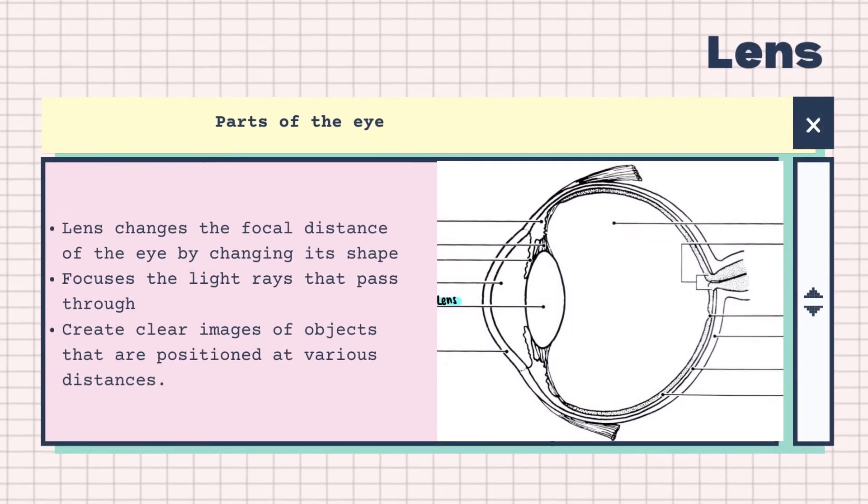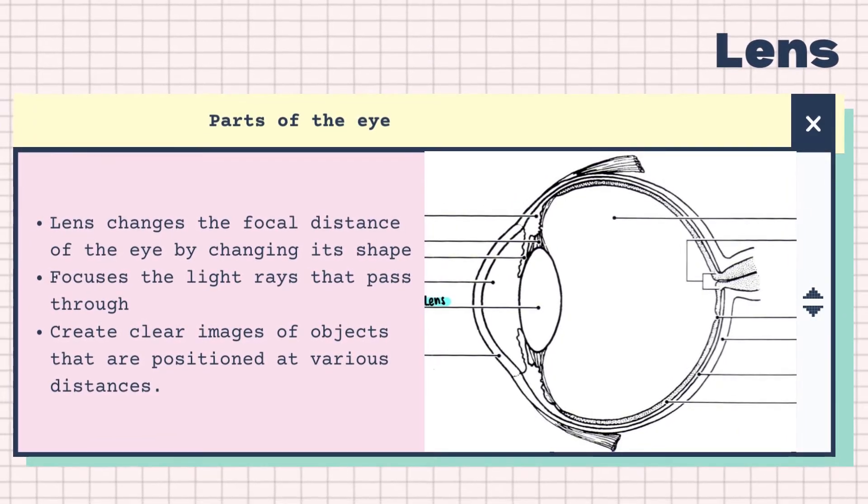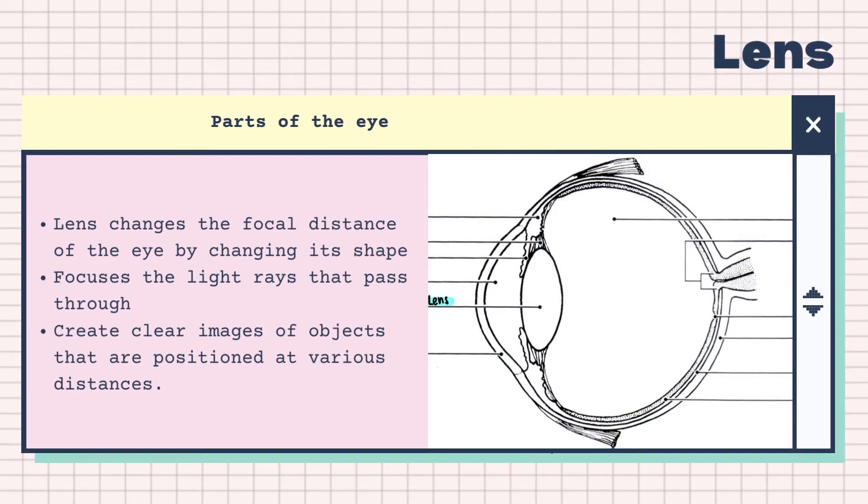The lens changes the focal distance in the eye by changing its shape. It focuses on the light rays that pass through it in order to create clearer images of objects that are positioned at various distances.